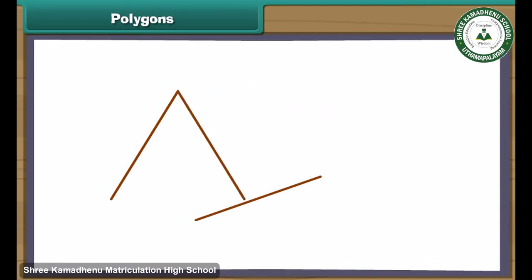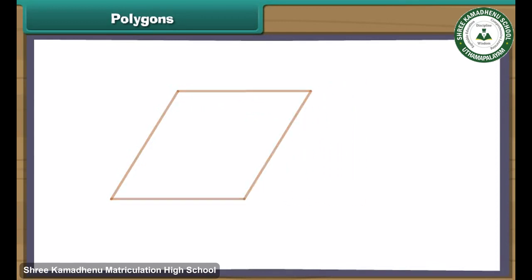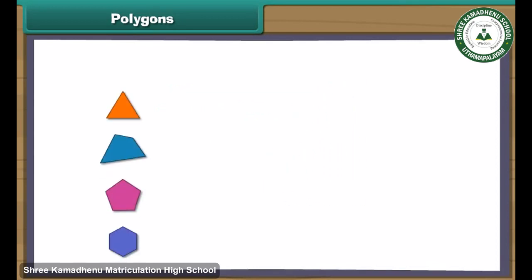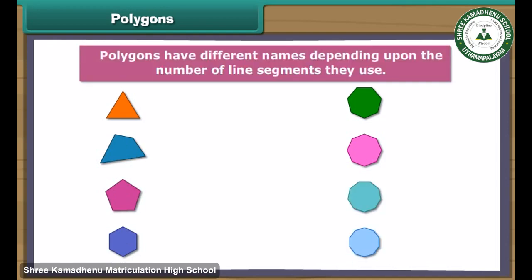We can form different shapes by enclosing them with line segments on all sides. Such closed figures are known as polygons. Polygons have different names depending upon the number of line segments they use.